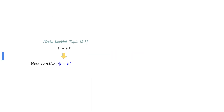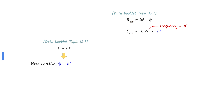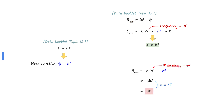First, let us find the work function. The minimum frequency required to eject photoelectrons from a metal surface is said to be F, so the work function is HF. Using the equation from the data booklet, the maximum kinetic energy of the photoelectrons with frequency 2F is found — we are told this kinetic energy is K, which means K equals HF. Now increase the frequency to 4F: subtracting the work function gives 3HF. Since K equals HF, the final answer is 3K.